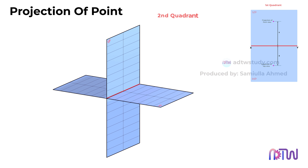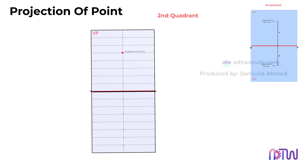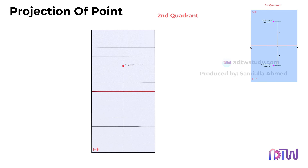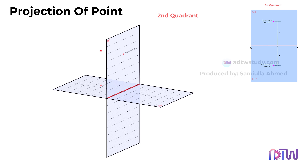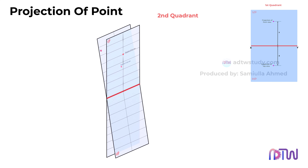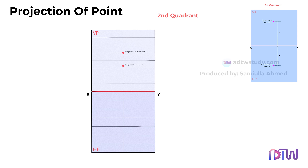Moving on to the second quadrant, where the point is positioned x distance away from the vertical plane and y distance from the horizontal plane — the point is said to be behind the VP and above the HP. The front view is projected onto the vertical plane, and the top view is projected onto the horizontal plane in the 3D view. To depict this in a 2D view, a 90-degree rotation of the horizontal plane is necessary. Upon doing so, both the vertical and horizontal planes overlap in the second quadrant, and consequently both the front view and top view of the point coincide above the xy-line.